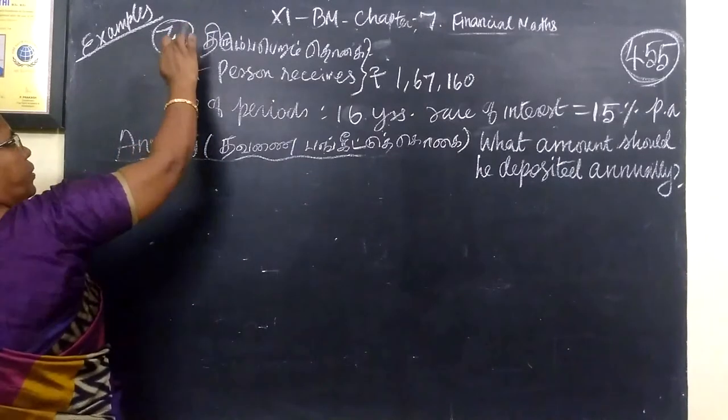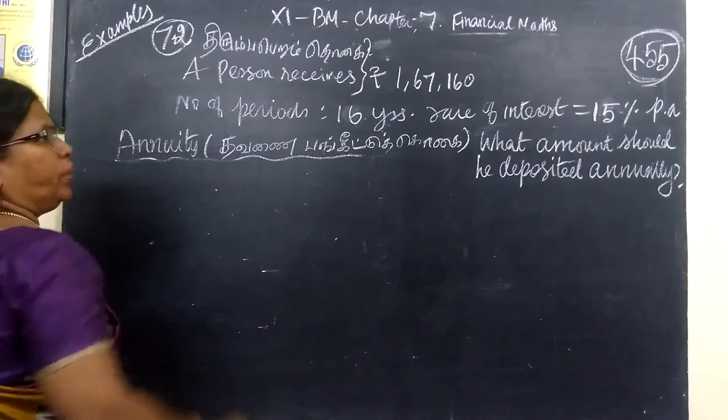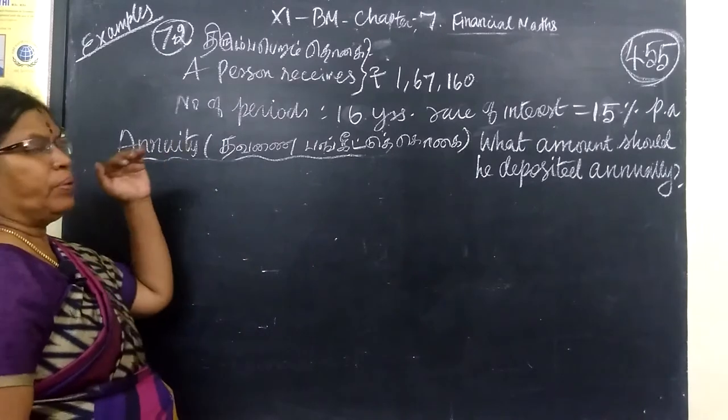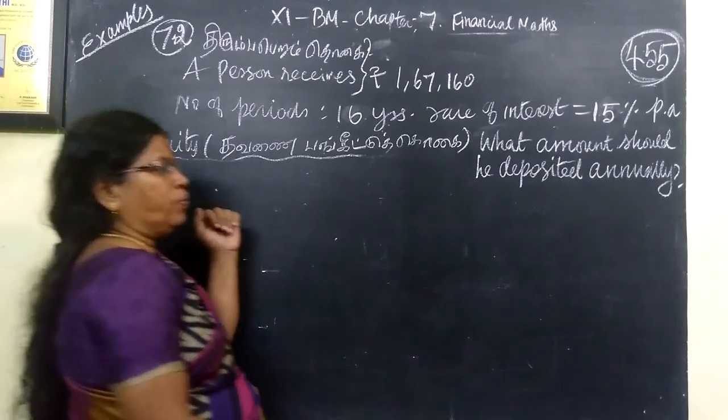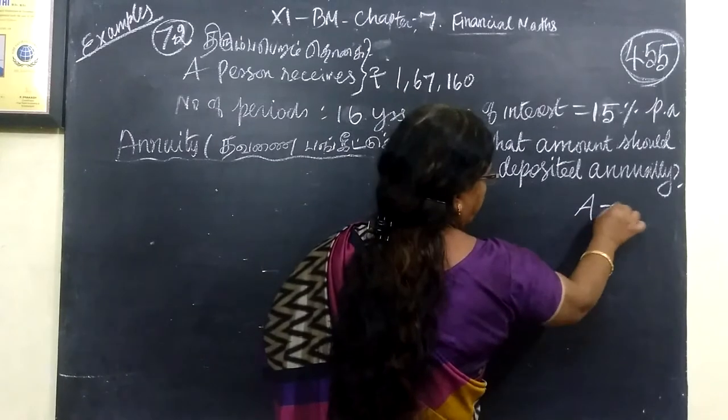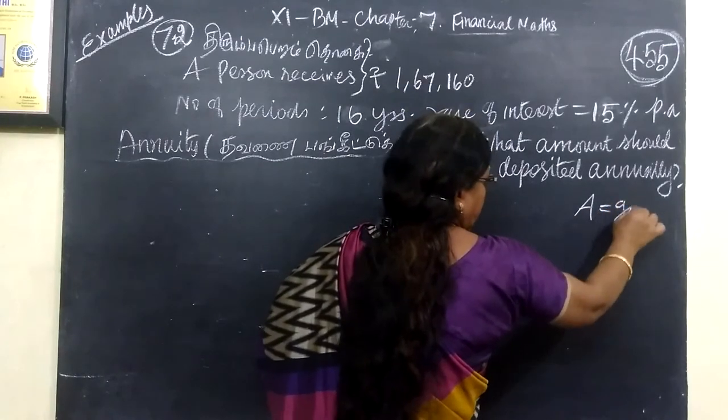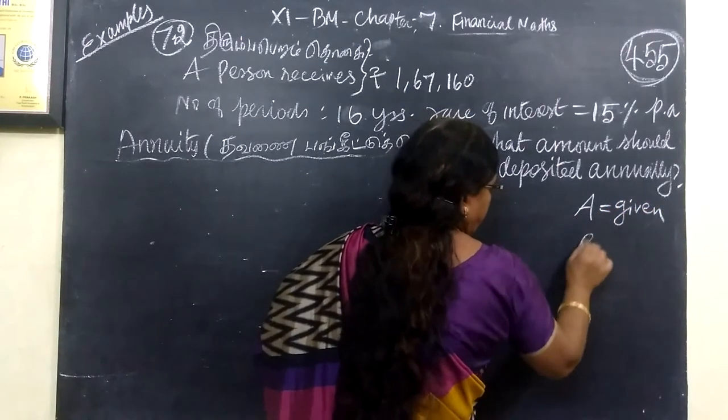Next one, the example is 7.2. In this case, we have a value, small a value, capital A value given, and we want to find small a.